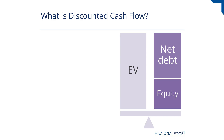In helping us answer the question 'what is discounted cash flow,' we start off by looking at the EV-equity bridge. We can see that if we took EV minus net debt we'd get to equity, or alternatively if I wanted to get to EV I could take equity plus net debt equals EV. The first one I want to look at is: EV minus debt equals equity. How do you actually calculate that EV, or enterprise value?